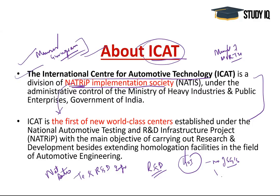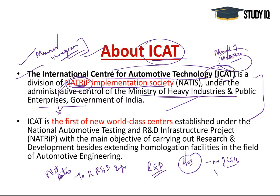NATRIP's goal is to create state-of-the-art testing for vehicles which run on the roads of India, to put India on the global automotive map. ICAT is one of the first new world-class centers under this project. The ministry of Heavy Industries and Public Enterprises launched NATRIP, while the Ministry of Road Transport is the apex body regulating it. Their main objective is to carry out research and development besides extending homologation, which means granting approval for vehicles by an official authority.